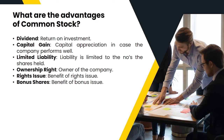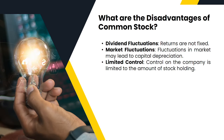Now, what are the disadvantages of common stock? The first disadvantage is dividend fluctuations — returns are not fixed. Sometimes the company may make a profit and sometimes may not, and even if the company makes a profit, they may or may not decide to distribute it amongst the shareholders. So equity holders are not guaranteed to receive a dividend.